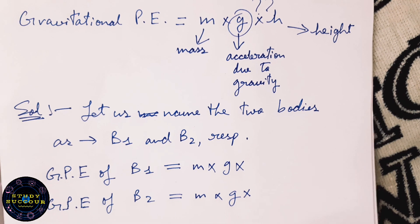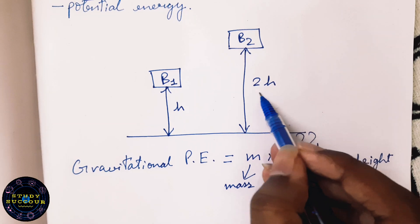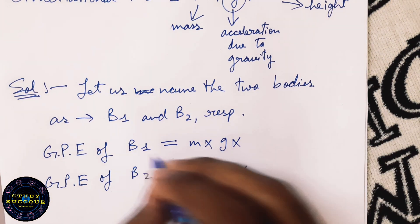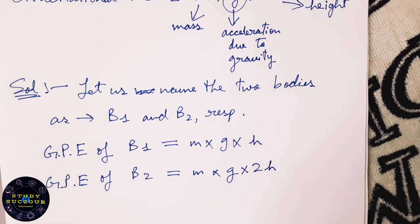Now for the height. For B1 the height is H and for B2 the height is 2H or 2 into H.